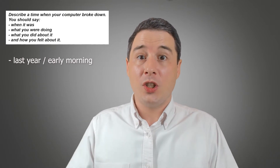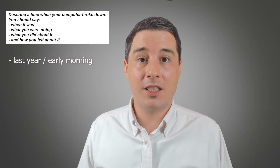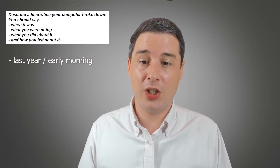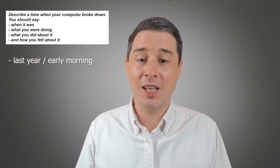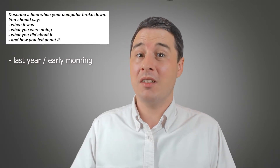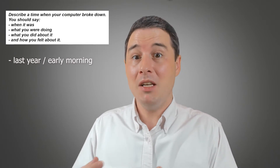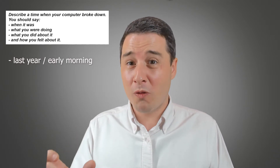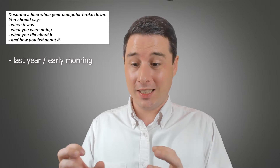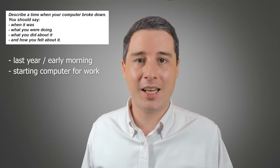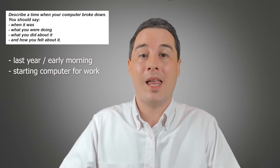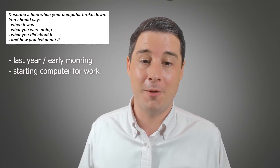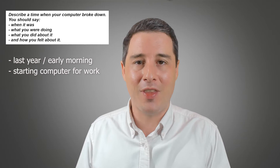Then what you were doing — so what was I doing at the time? I've got to write down another idea for this second cue. I was starting up my computer to begin working in the morning. So in short note form: 'starting computer for work.' Write down that idea, and then of course we'll expand on that when giving our full answer, but the main idea is down there so I don't forget.